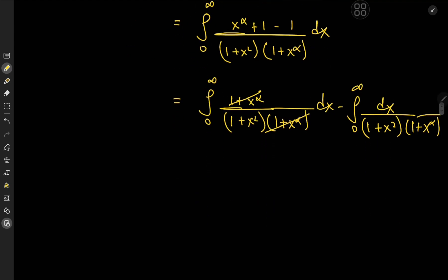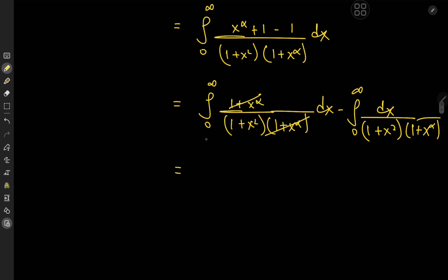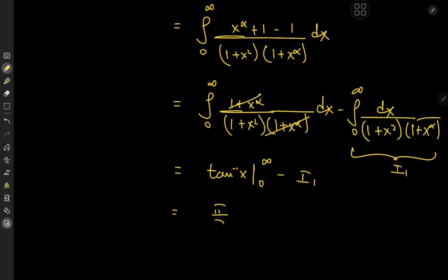So we have the integral from zero to infinity of 1 over (1 + x)², which we know gives the arctangent function — arctan x evaluated from zero to infinity — and we'll call this I₁. So we have π/2 minus I₁ as I'(α).